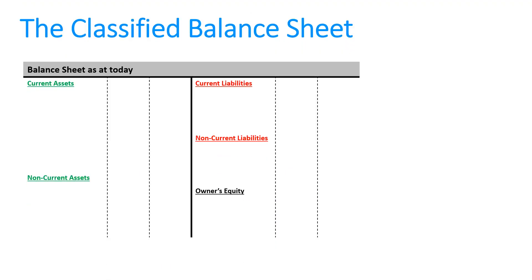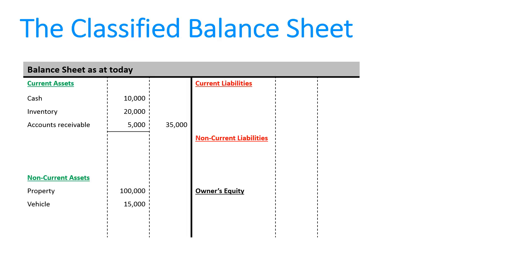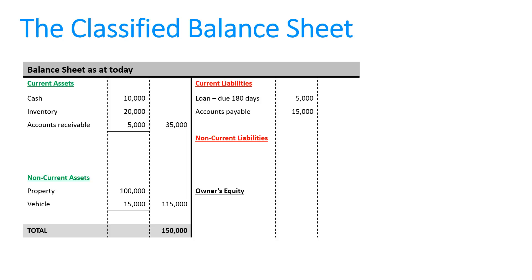So instead of the balance sheet we saw before, we now have it broken into sections — classified into current and non-current. We have our current assets totalled up, our non-current assets, and an overall total for total assets. For current liabilities, one of those loans is due in 180 days plus accounts payable, and for non-current liabilities, we have another loan due in 10 years and a mortgage.